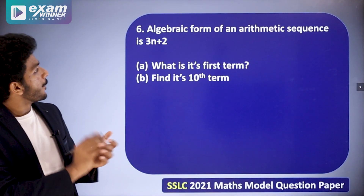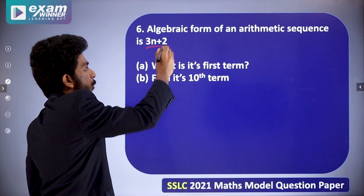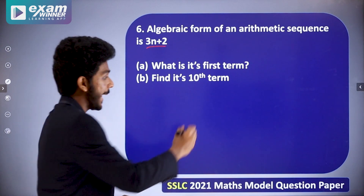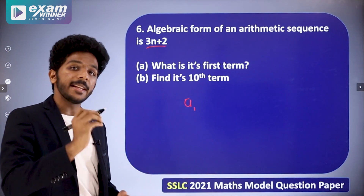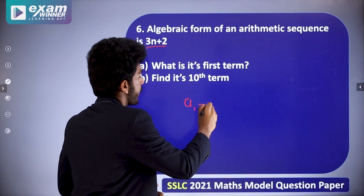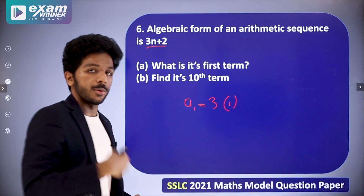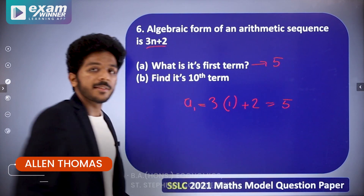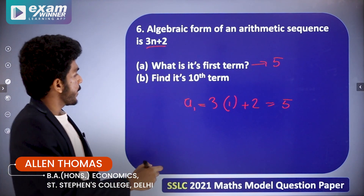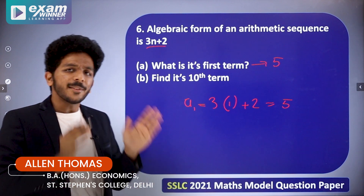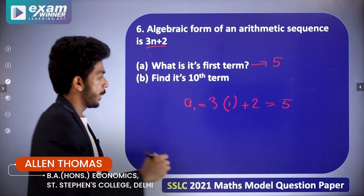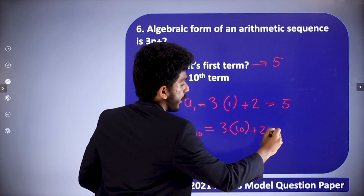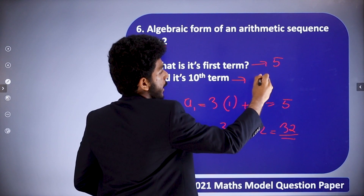Next question about an arithmetic progression: the algebraic form of an arithmetic sequence is 3n + 2. Part A — what is the first term? A1 = 3(1) + 2 = 5. Part B — find the tenth term. A10 = 3(10) + 2 = 32. So the first term is 5 and the tenth term is 32.